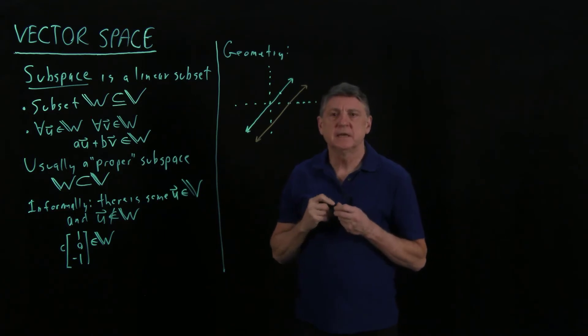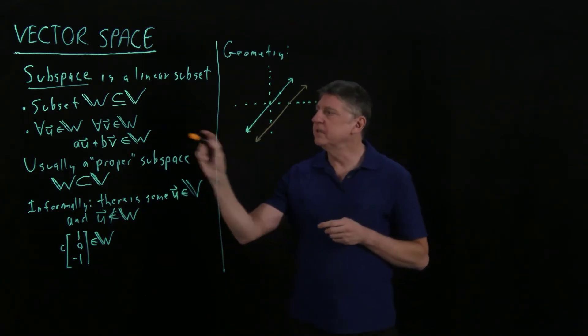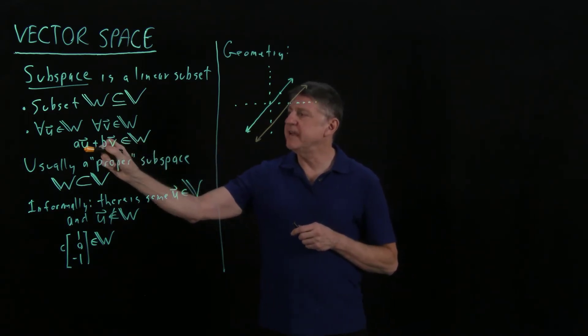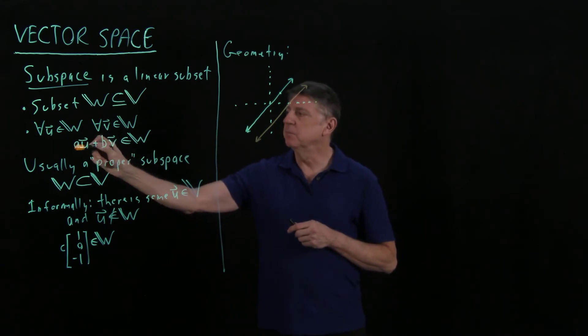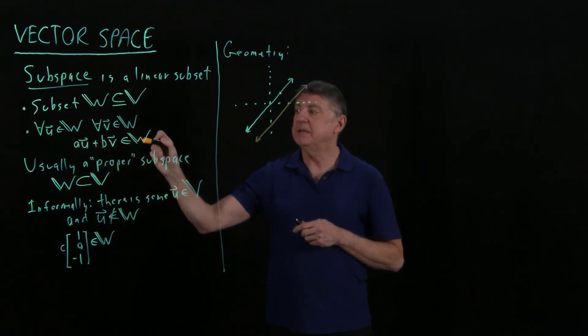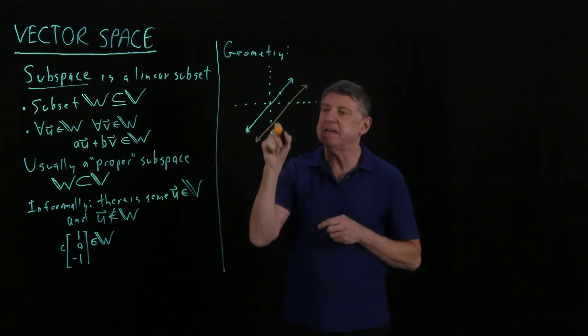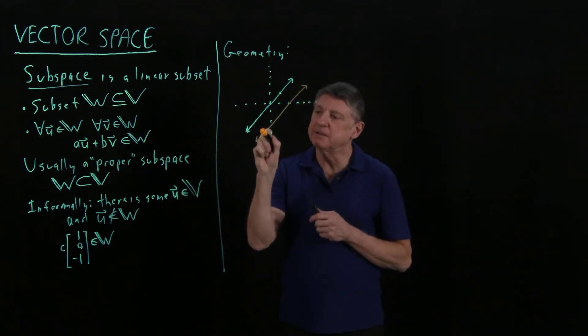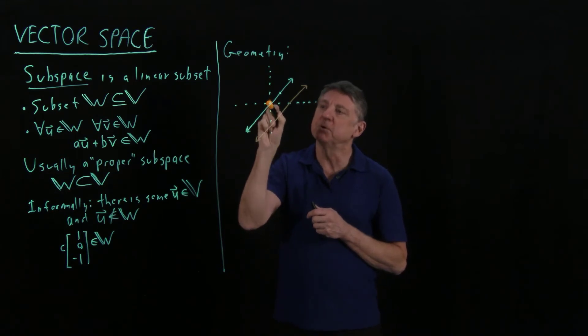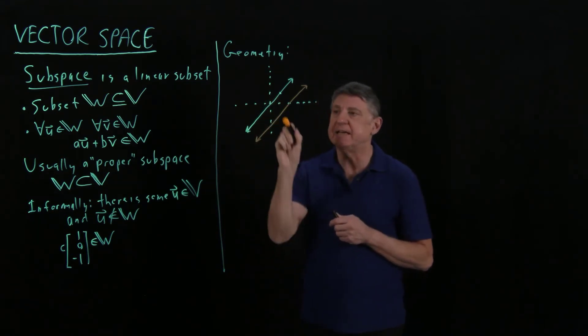And the reason is that one of the things that we can do is we could take a vector, and then we could multiply it by zero, and that has to be in the subspace. And if I take a vector such as this, and I multiply it by zero, it goes, boom, over to the origin, and it's no longer in.